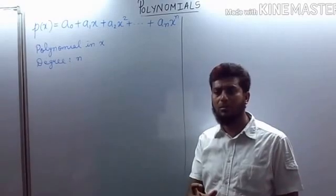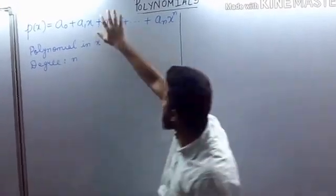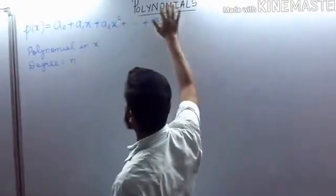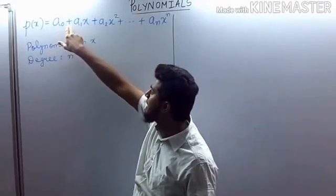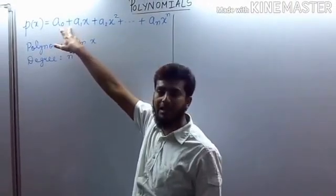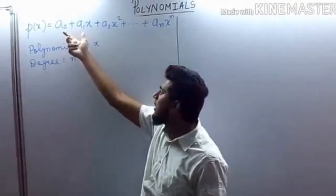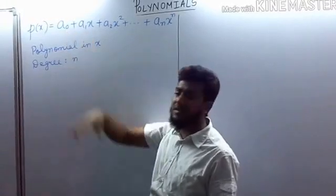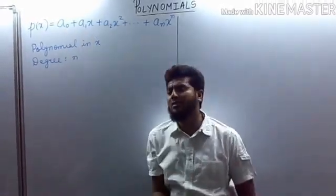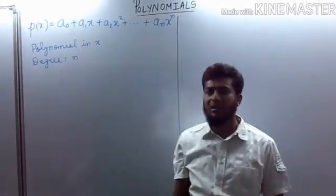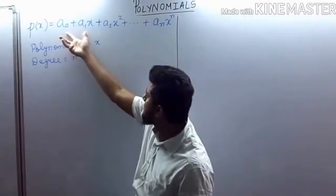Monomial means a single term — it will be a single term with no plus or minus sign. Binomial means two terms. For example, if we look at these two terms here separated by a plus sign, terms separated by plus or minus signs are called monomial or binomial accordingly.